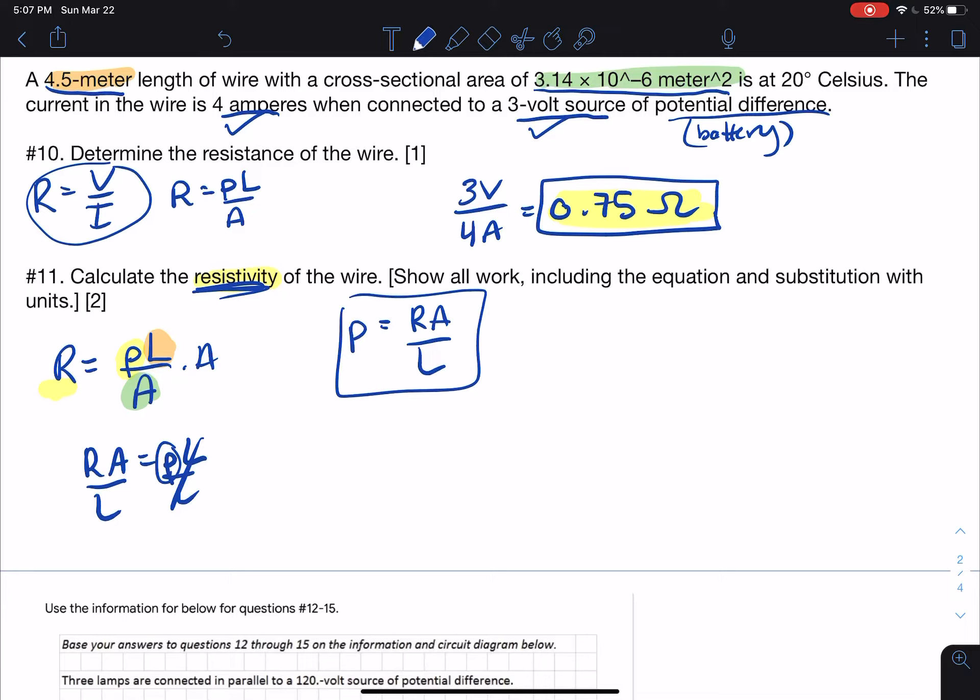And then what I'm going to do is I'm going to substitute my numbers in. So 0.75 ohms times my area, 3.14 times 10 to the negative 6 meters squared, divided by my length, 4.5 meters. And that's going to equal my resistivity.